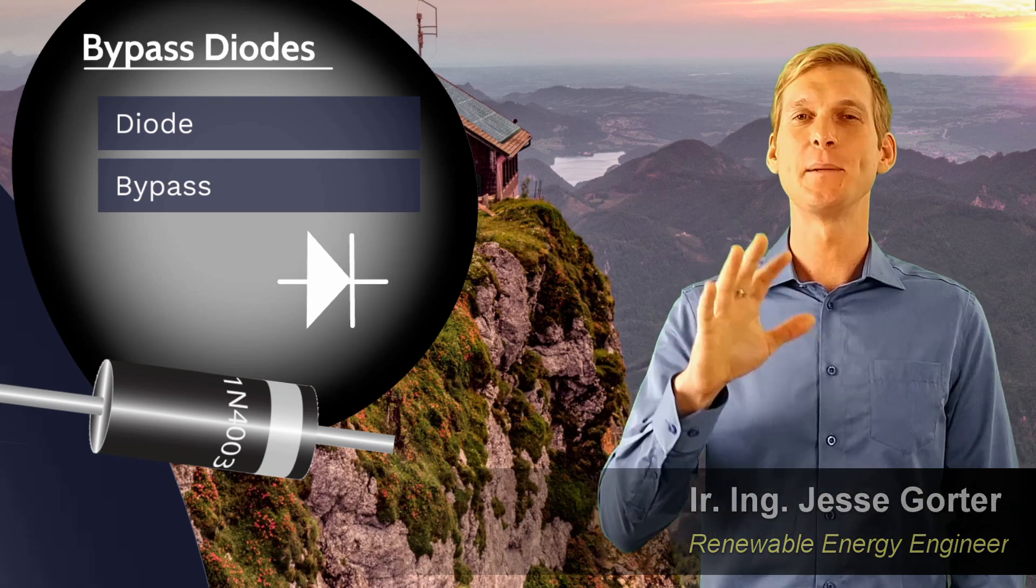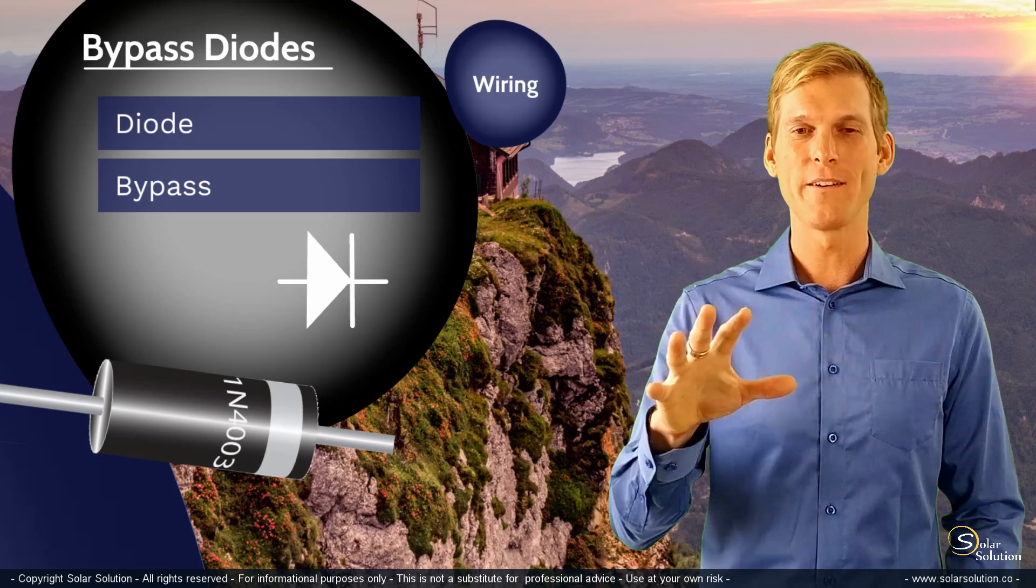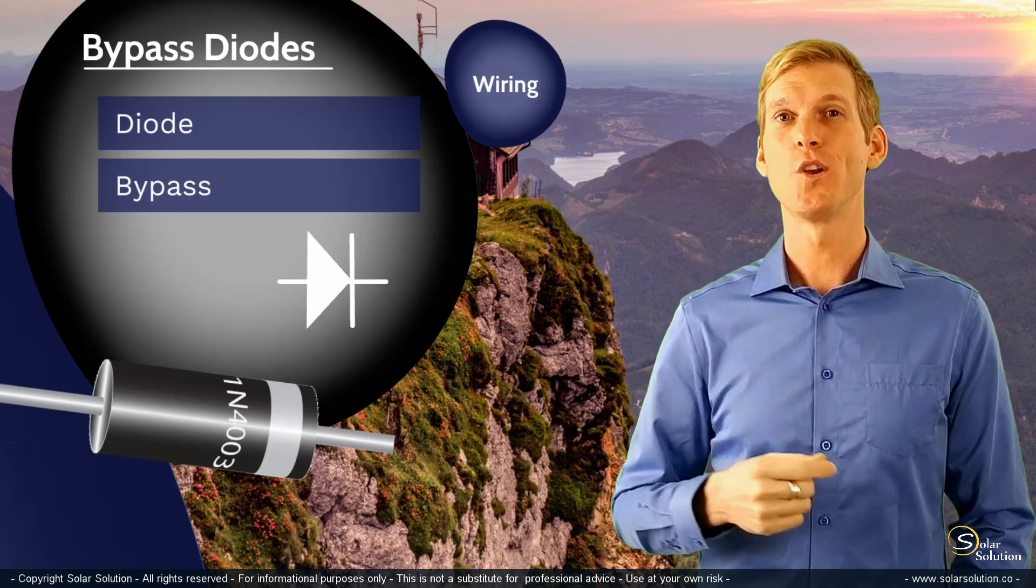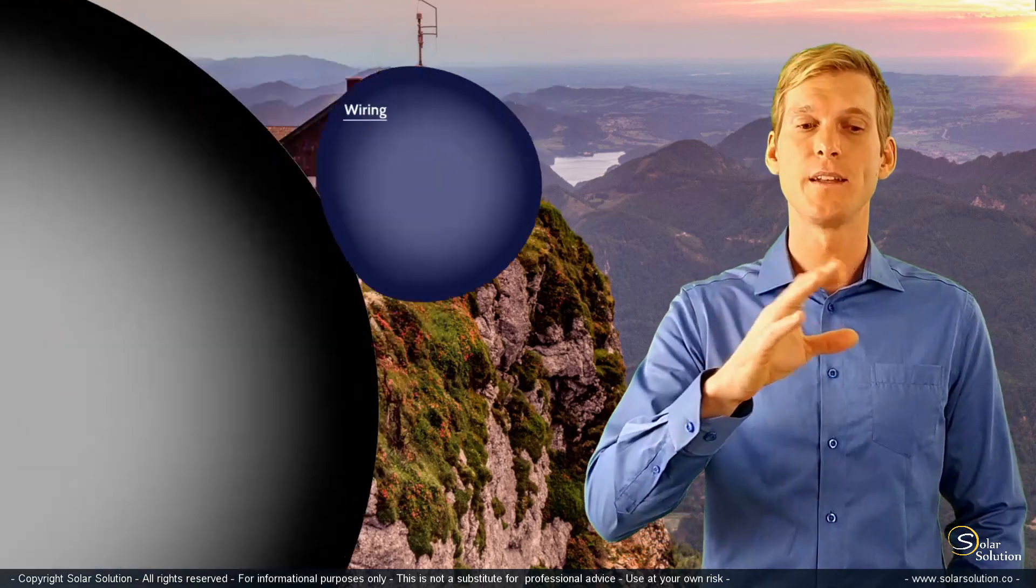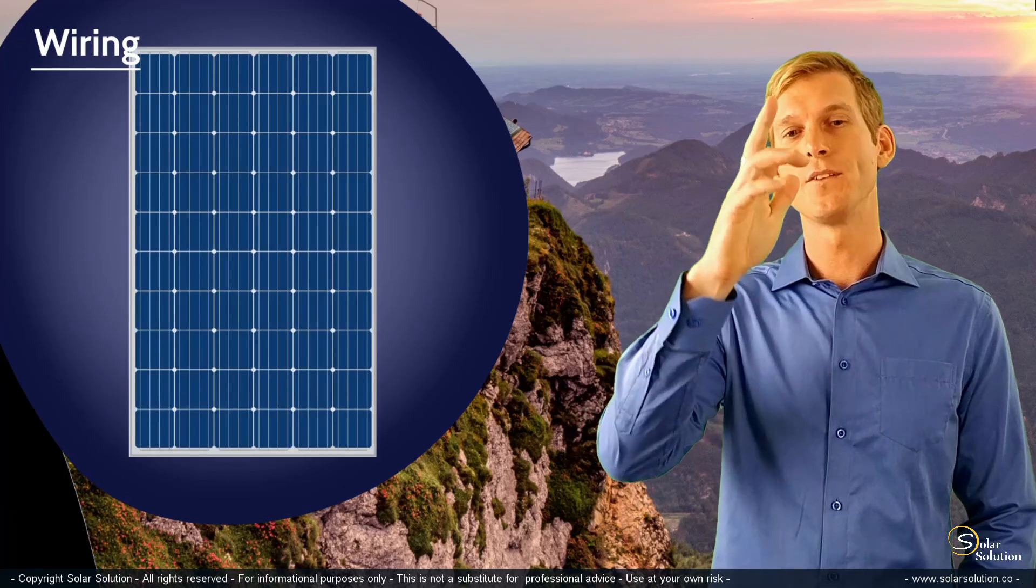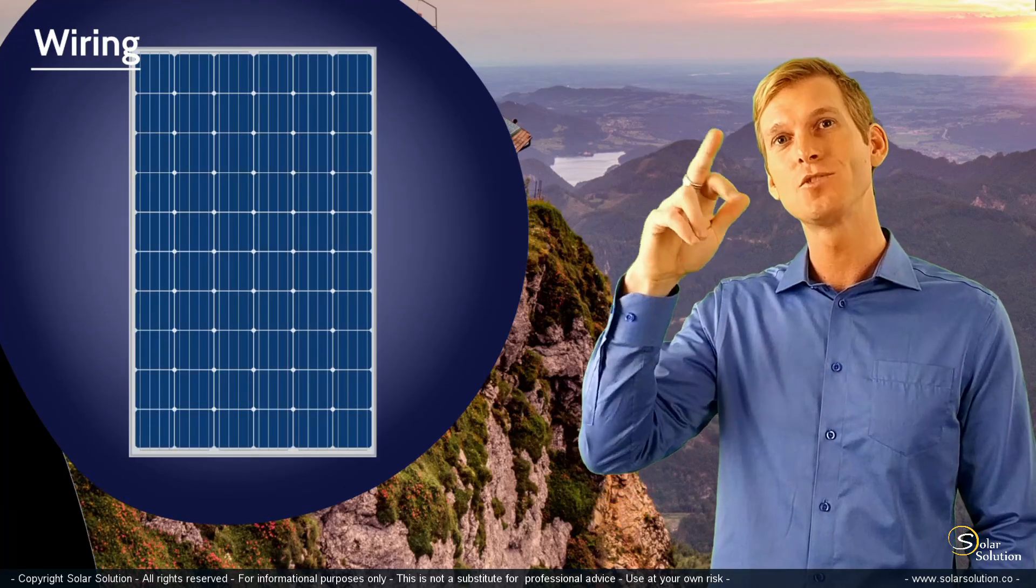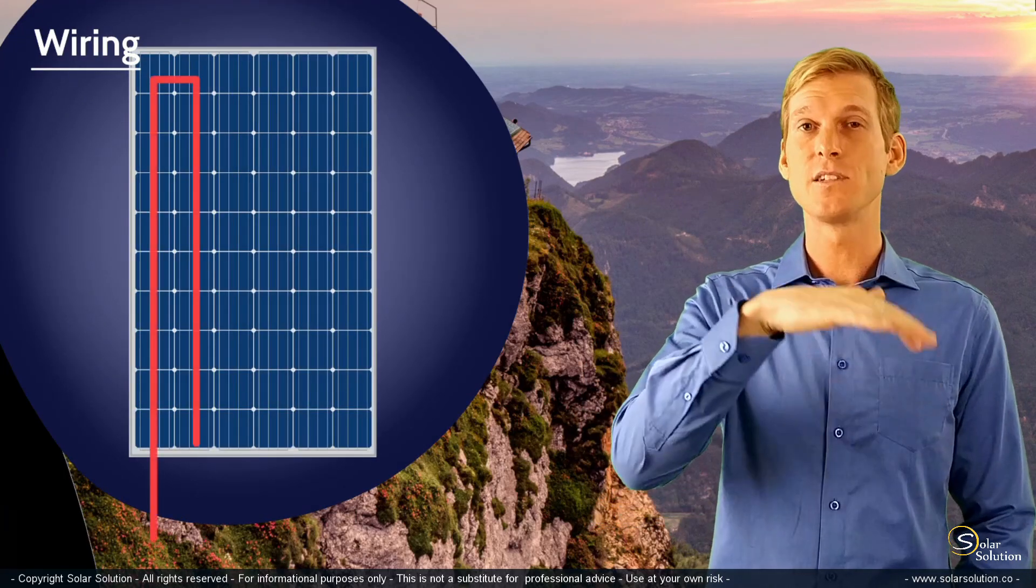Let me explain this as simply as I can with a simple wiring diagram of a typical solar panel. By now you understand that all the cells of your solar panel are connected in one long string, all connected in series with each other.